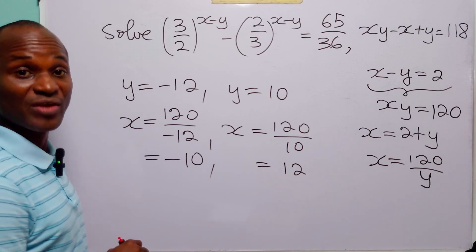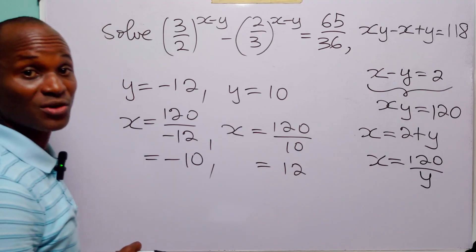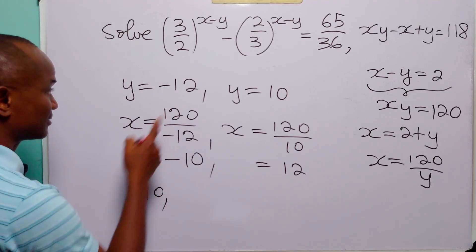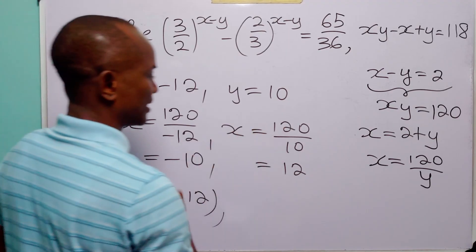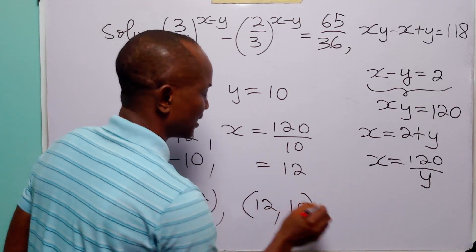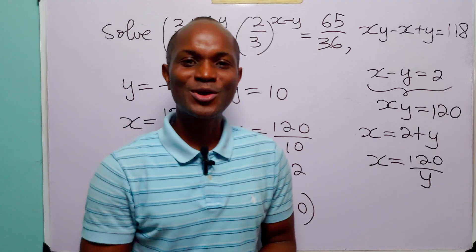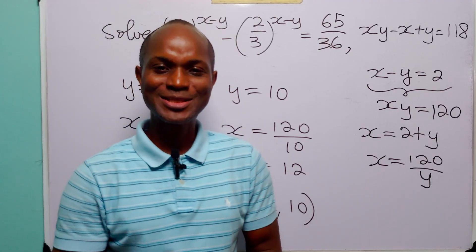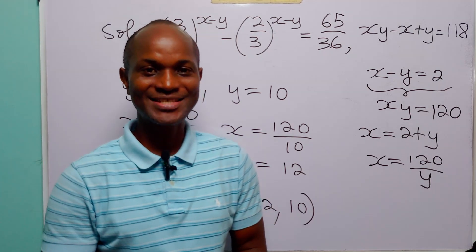So the two values of x and y that satisfy these two equations simultaneously are x equals minus 10 and y equals minus 12, or x equals 12 and y equals 10. With this, we come to the end of today's tutorial. I hope you learned something new. If you enjoy such content, please subscribe to the channel and leave a like to support the channel. Thanks for watching and see you in the next video.